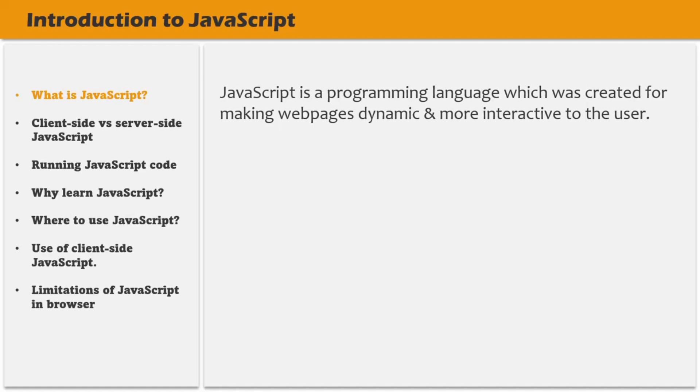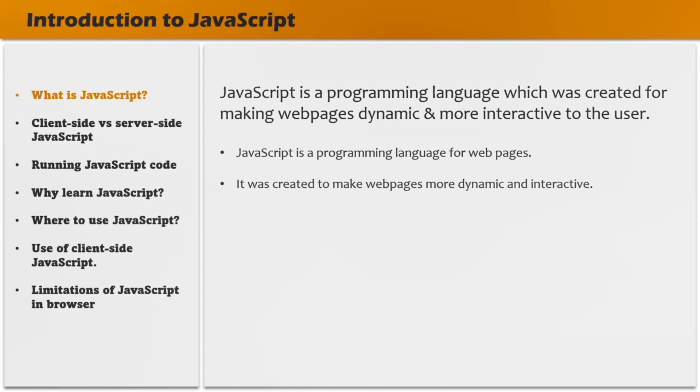A web page without JavaScript is simply a static web page — its content cannot be changed dynamically. Also, without JavaScript, you will not be able to handle events on your web page. For example, when a button is clicked, you might want to display an alert message to the user, or you might want to read form data from a text box. But without JavaScript, all these things are not possible. In simple terms, JavaScript is a programming language for the web, created to make web pages more dynamic and interactive.